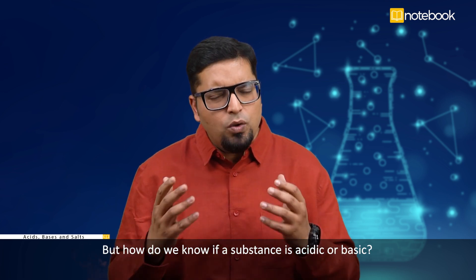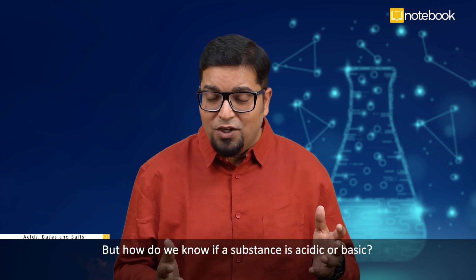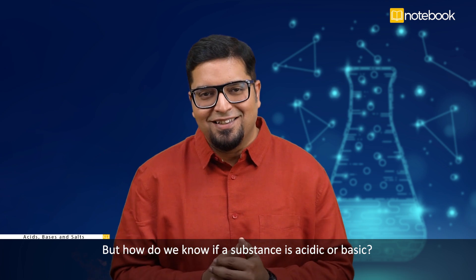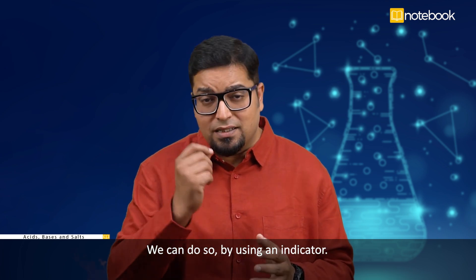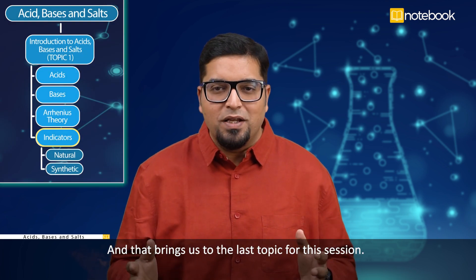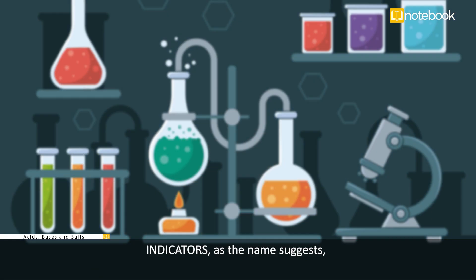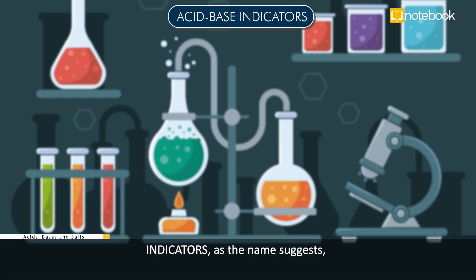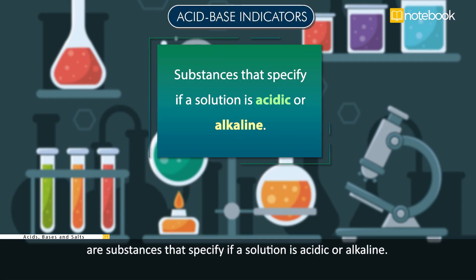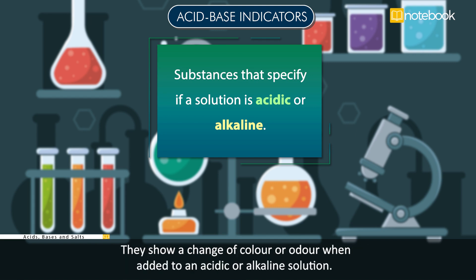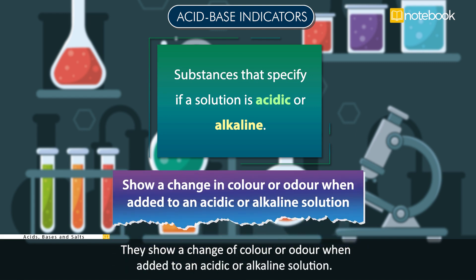How do we know if a substance is acidic or basic? We can do so by using an indicator. Indicators are substances that specify if a solution is acidic or alkaline. They show a change of color or odor when added to an acidic or alkaline solution.